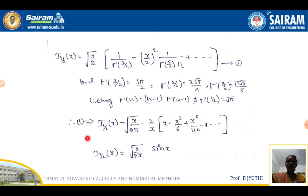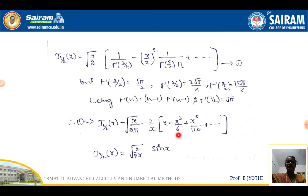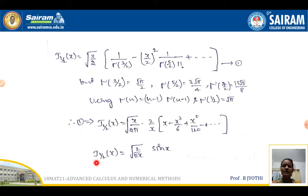Substituting into equation 1, we take √(2/π) outside, and also 2/x can be taken outside. Then we get x − x³/6 + x⁵/120 − etc., so that J₁/₂(x) = √(2/πx) · sin(x), because this is a sine series.